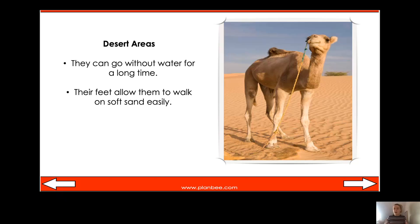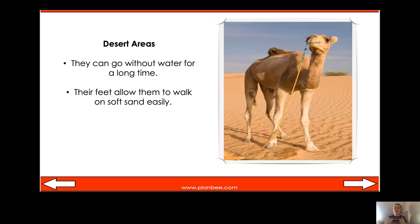The camel has adapted to living in a desert by being able to go a long time without any food or water. They also have feet that help them walk on soft sand easily. So there are two ways camels have adapted to desert life: their feet and the fact that they can go for a long period of time without any food or water.